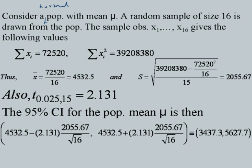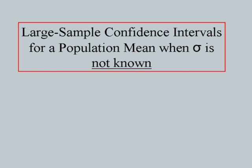One important point: when we say 'consider a population with mean mu,' it is important to specify that the population is normal in order to use this confidence interval. If the population is normal then, when sigma is not known, this result follows from the T distribution. However, when we have a large sample, we may not need to explicitly state that the population is normal even when sigma is unknown.